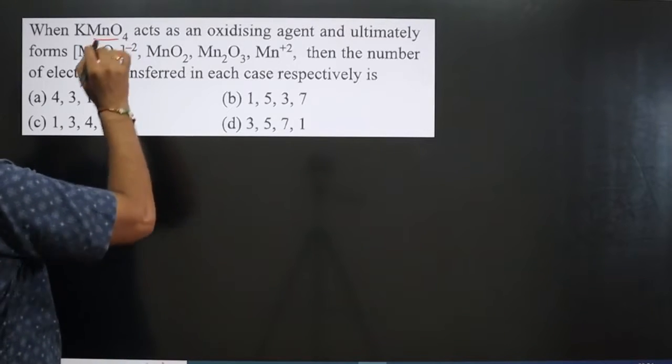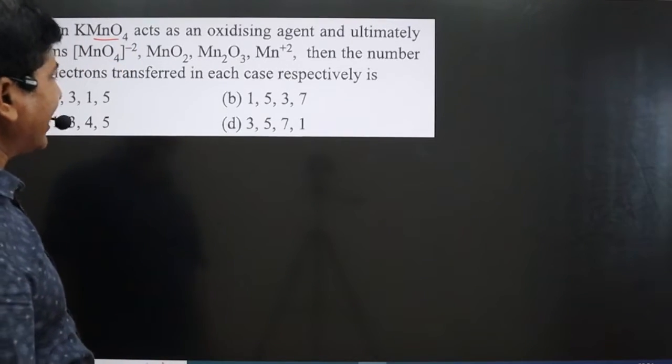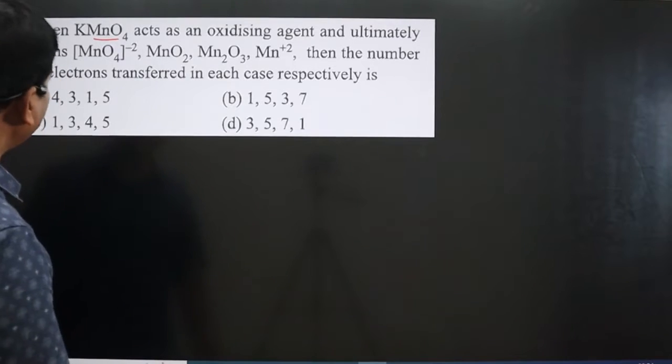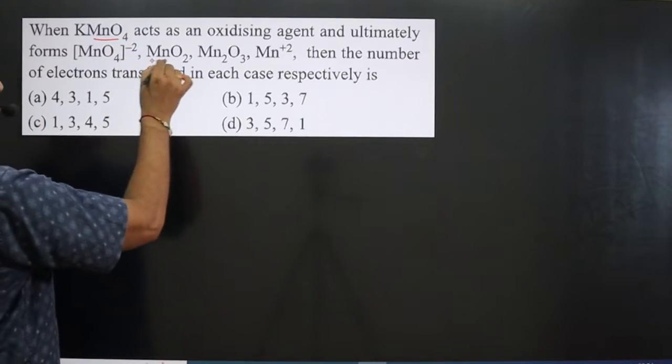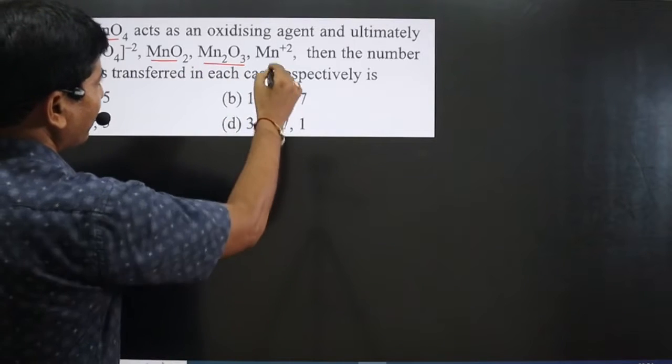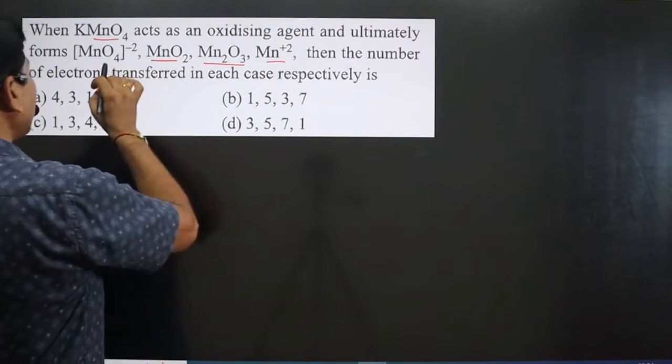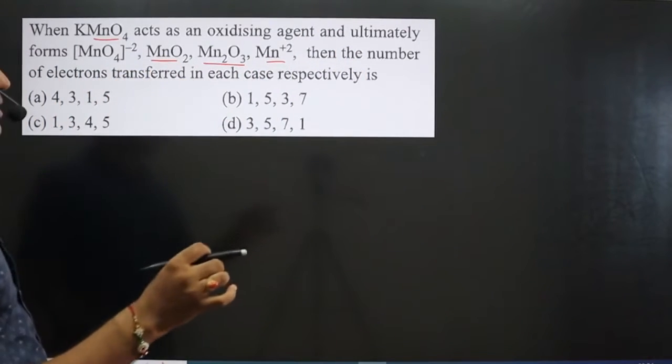The question says when KMnO4 (potassium permanganate) acts as an oxidizing agent and ultimately forms MnO4^2-, MnO2, Mn2O3, and Mn^2+, then the number of electrons transferred in each case respectively.